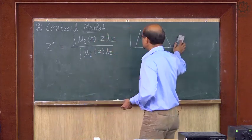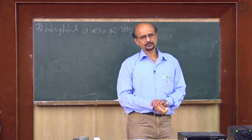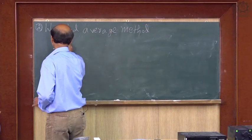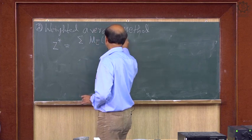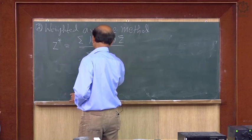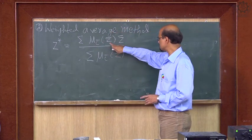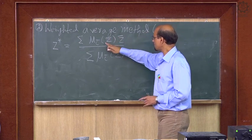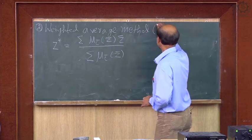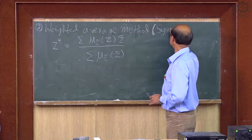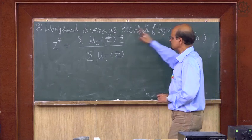The next method is the Weighted Average method. Here we have z* = Σ μ_c̄(z̄) · z̄ / Σ μ_c̄(z̄). Note that I changed the variable to z-bar. This method is valid for symmetric membership functions — that is the condition for the weighted average method; otherwise you should not use it.